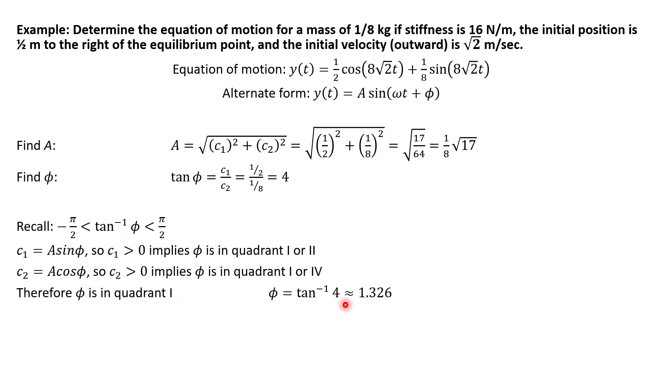So tangent inverse of four is phi, which is about 1.326. And so our final answer in our alternate form is that y equals square root 17 over eight, sine of our omega eight square root two times t, plus tangent inverse of four. So you could put the 1.326 here, but to be more precise, I put the unrounded answer.